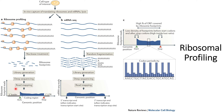One important piece of information we get from this is that we are able to identify where the start codon and stop codon are in the genomic sequence from the samples. Simultaneously, we are also able to identify the untranslated regions both upstream and downstream of the genomic sequence.